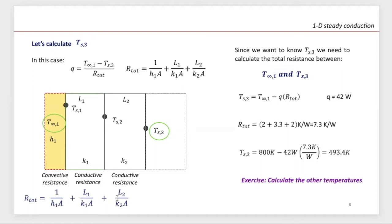Two conductive because we have two layers only to analyze at this point, and one convective because we have a fluid-solid interface. We already have the values from the previous slide, and the R total is going to be 7.3 if we count three resistances. So TS3 is going to be T surroundings one minus the heat transfer rate multiplied by R total — considering heat transfer rate is constant under steady state conduction. That gives us a value of 493.4 Kelvin for TS3.